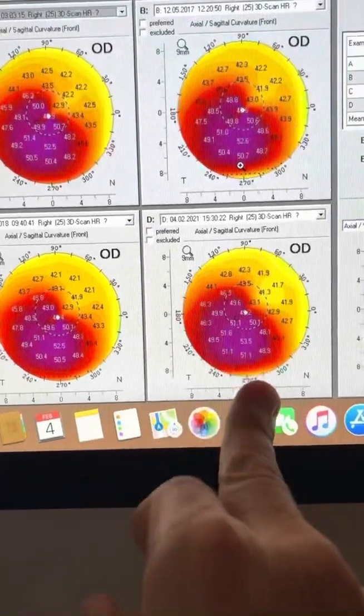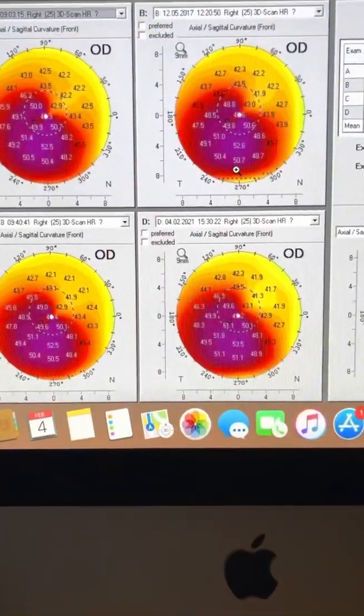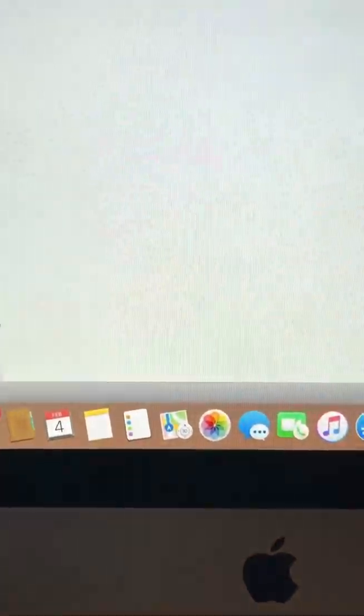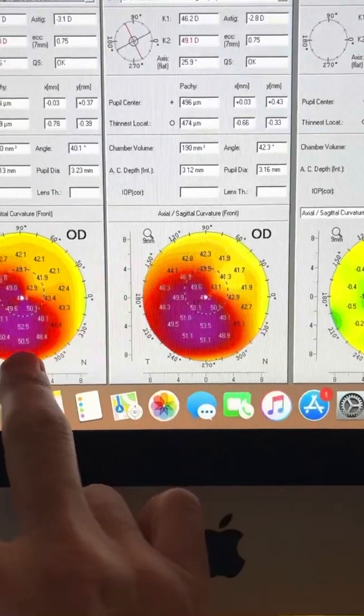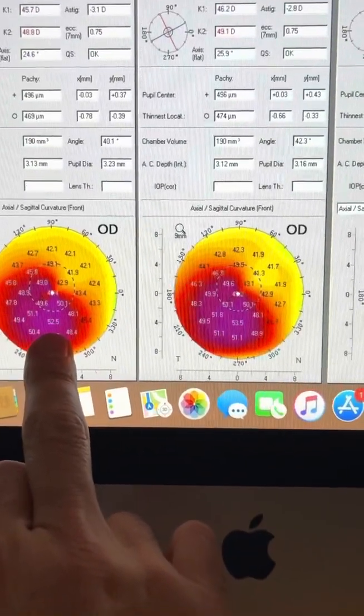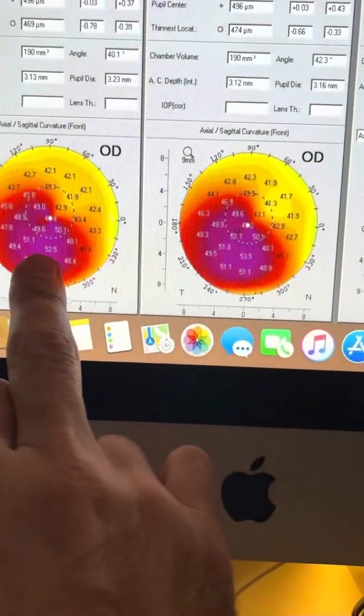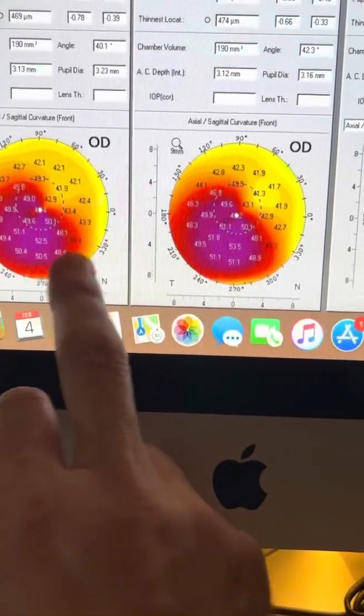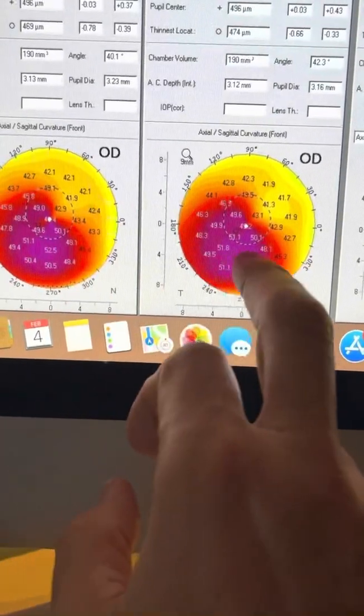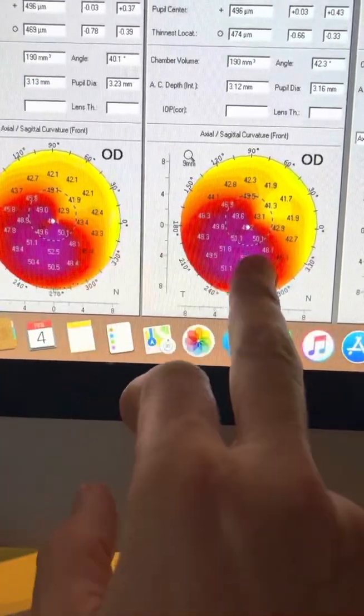So we have a five year, four and a half year follow-up. And if we go to see the actual changes in her right eye since 2018, we can see a one diopter change. She was 52.5, she's 53.5. So a diopter change at the peak of the cone. And the cone looks a little bit worse overall.